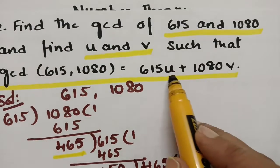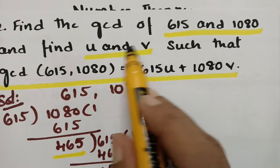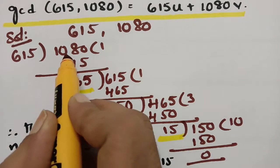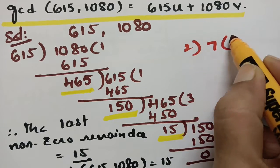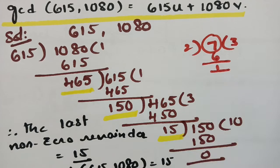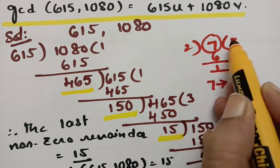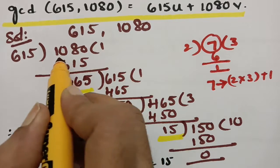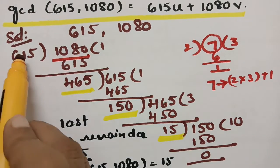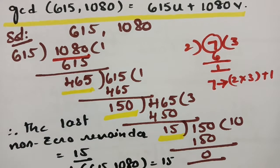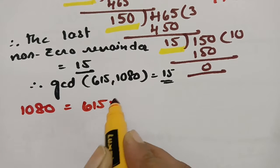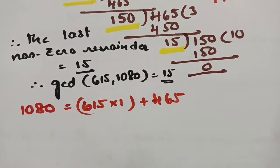Now we have to find the relation between U and V and find the values of U and V. According to the division algorithm, if 7 is divided by 2, then 2 times 3 is 6, plus remainder 1, gives back 7. Likewise, to recover 1080, we multiply: 1080 equals 615 times 1 plus the remainder 465.